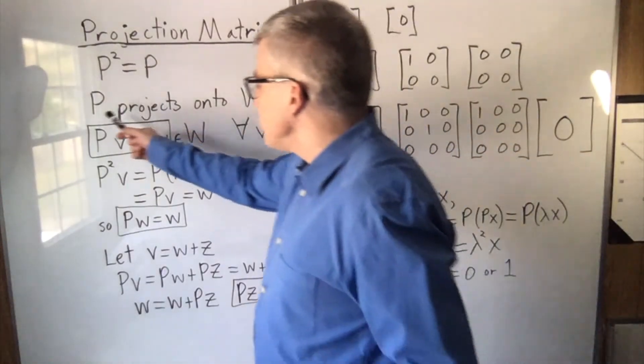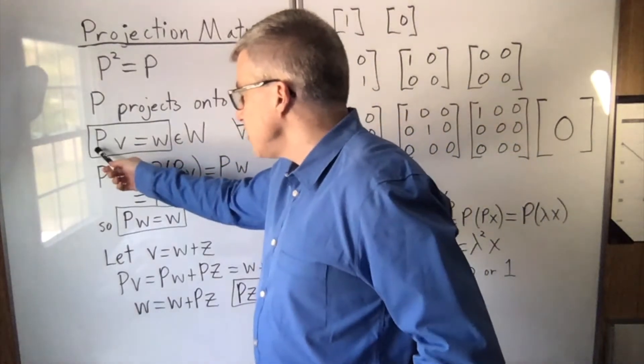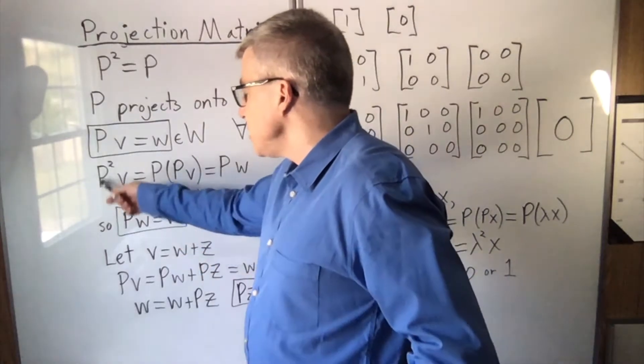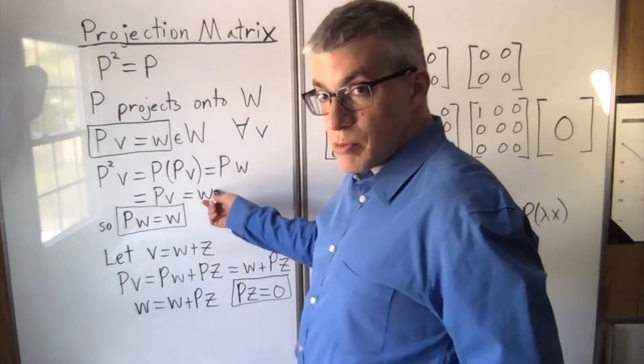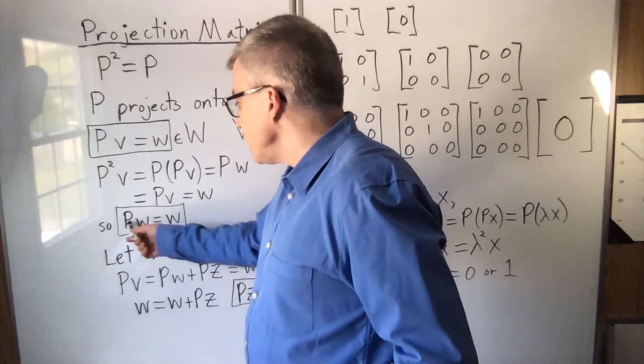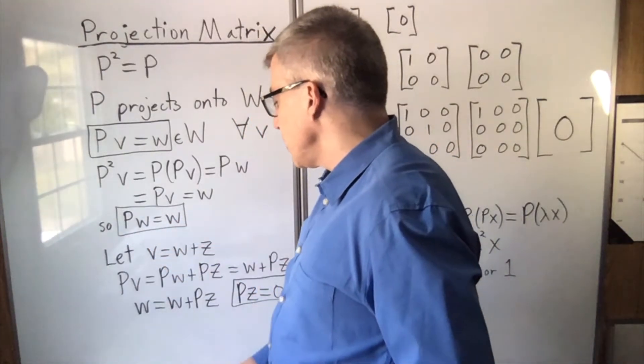Now, if p projects onto w, then pv equals w. And p squared v is also w. Applying p twice doesn't change anything. It's redundant. So pw equals w.